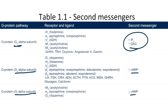We'll go through each of these pathways more in a second. Before we move on, notice that there are many receptors that are associated with G proteins. For example, H1, alpha 1, V1, etc. are associated with the GQ alpha subunit pathway. These can be difficult to memorize, so some students use the mnemonic HAV1MM to help recall this information.